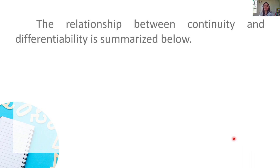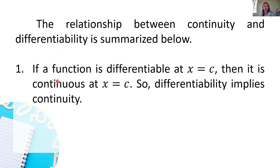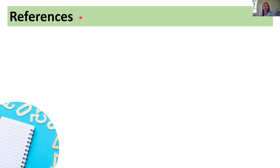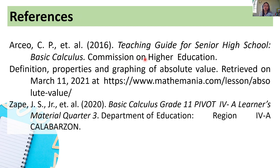To summarize the relationship between continuity and differentiability: first, if a function is differentiable at x equals c, then it is continuous at x equals c — differentiability implies continuity. Second, it is possible for a function to be continuous at x equals c and not be differentiable at x equals c — continuity does not imply differentiability, as shown in Examples 2 and 3. I hope you learned something today. Thank you all for watching. Bye!